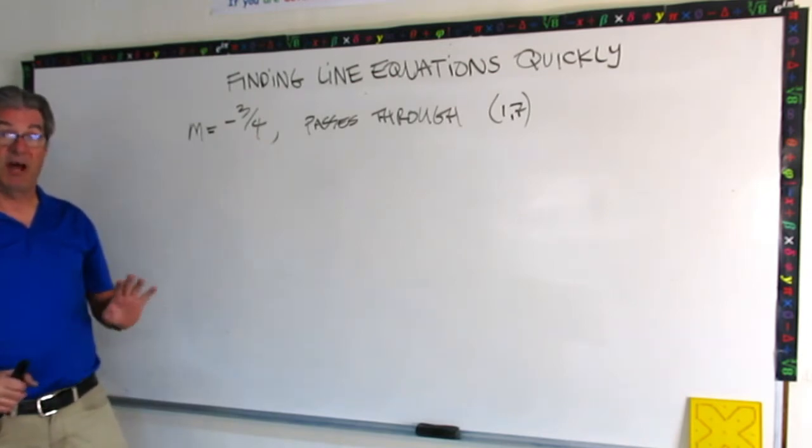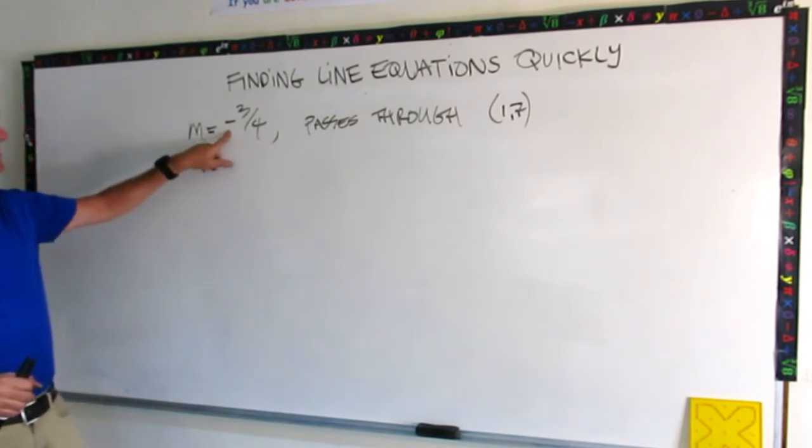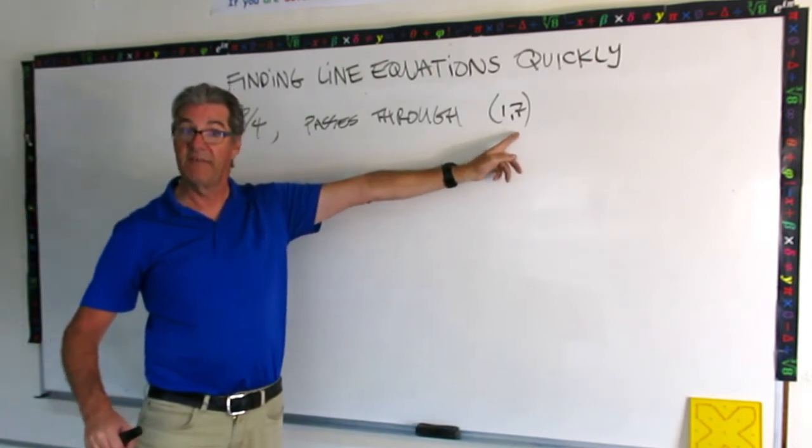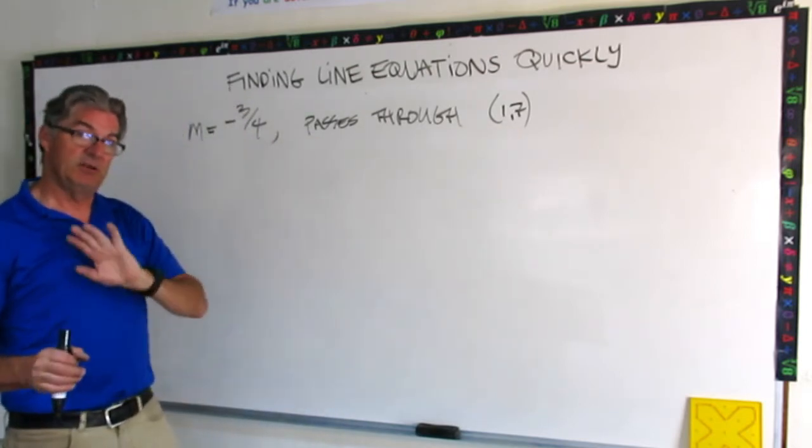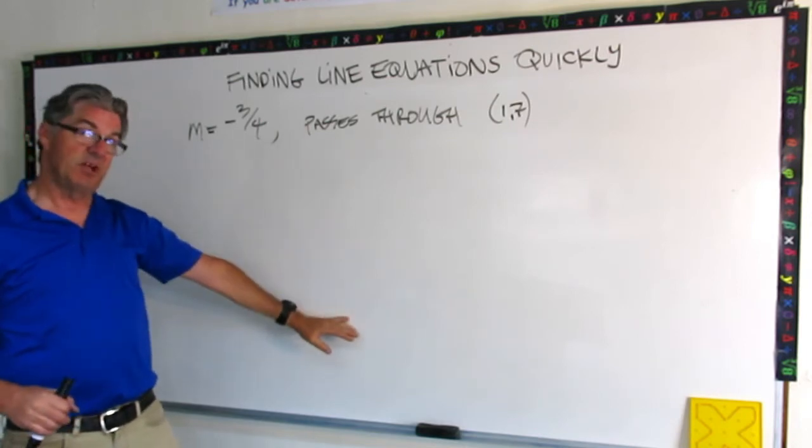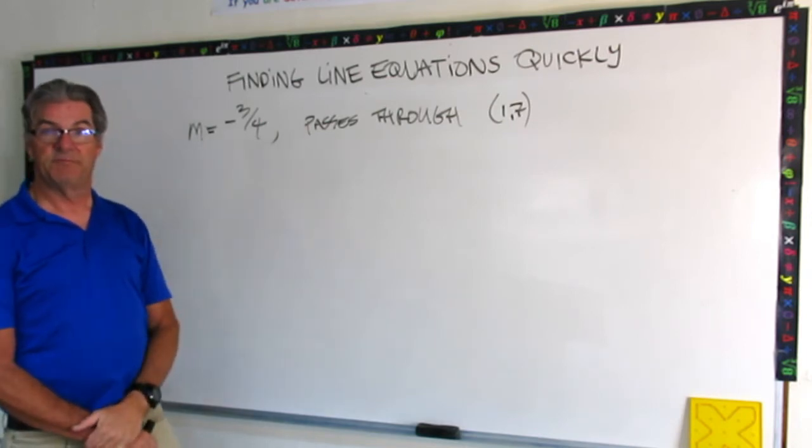Here's one for you to try. So here's your setup. Your slope is negative three quarters and this line passes through the point one seven. So pause the video. Use what you just learned on the last two boards and give me the general form equation for this line.